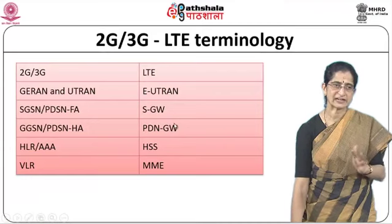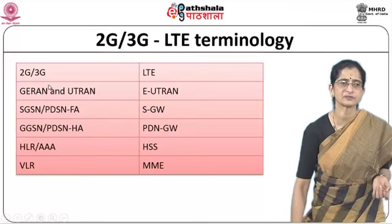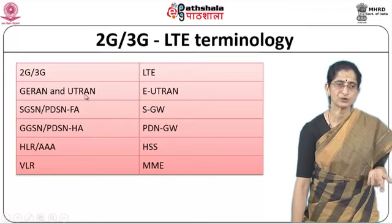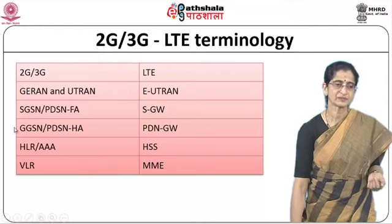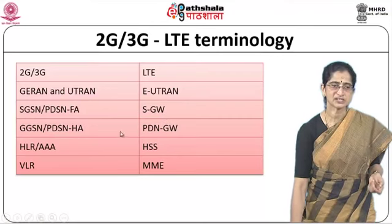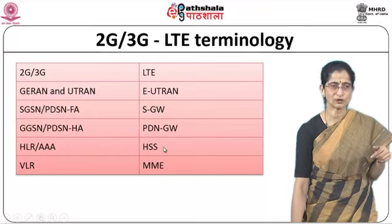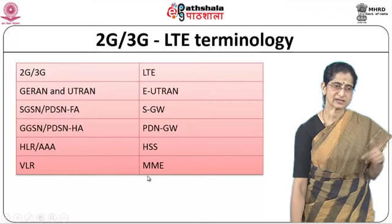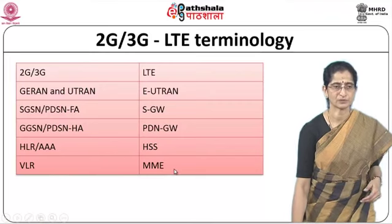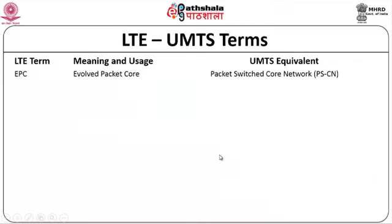Looking at some 2G, 3G, and LTE terminology — some terms are equivalent. In 3G, UTRAN here is referred to as E-UTRAN in LTE. The SGSN has an equivalent called S-Gateway. The GGSN has something called a PDN gateway or P-Gateway. The HLR and AAA are referred to as HSS. The VLR is handled by something called MME which stands for mobility management entity. These are given different names but perform similar functions.